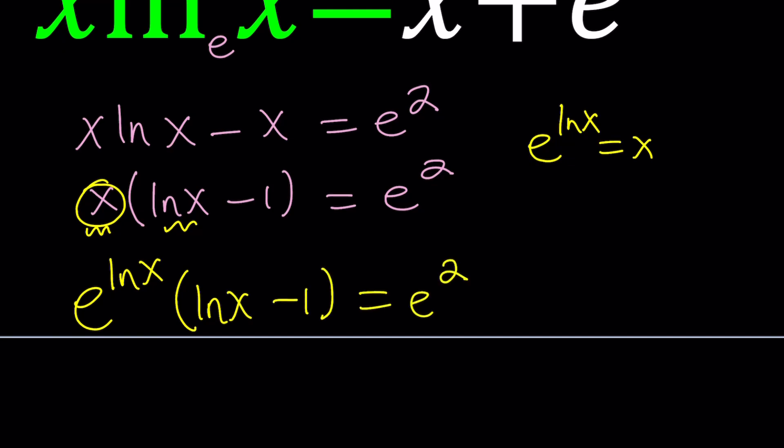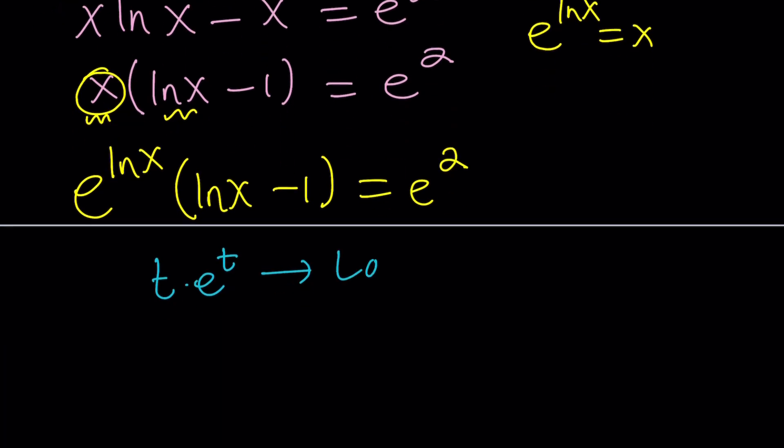Does this look good? Not yet. We do need something that looks like this: t times e to the power t. It's not in that form yet. Why are we trying to put it in that form? So that we can use Lambert's W function. To be able to use Lambert's W function, by the way, what is Lambert's W?